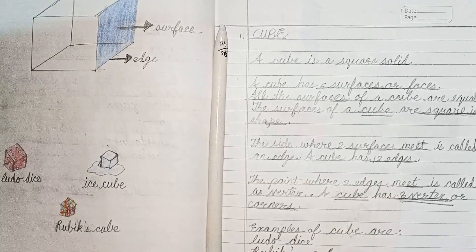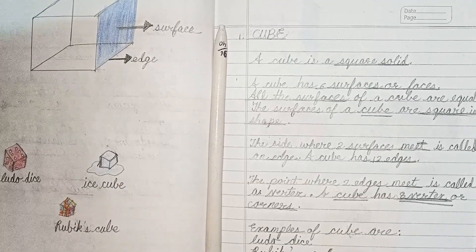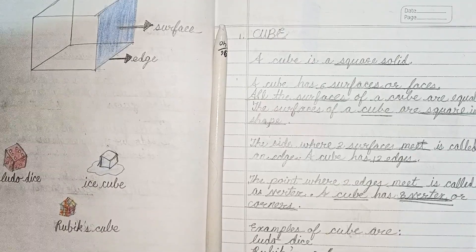For example, Ludo dice, Rubik's cubes, ice cubes - these are all cube in shape.